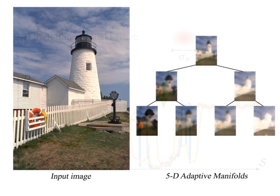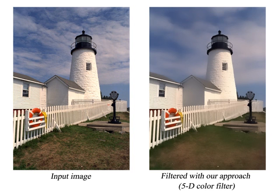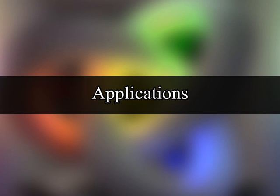This tree illustrates the adaptive manifolds used to filter the image on the left, which generates this result. Our approach to high-dimensional filtering can be used as a building block for many applications.